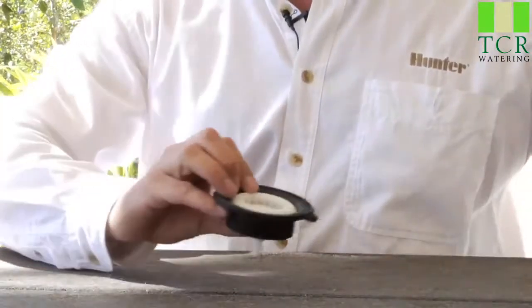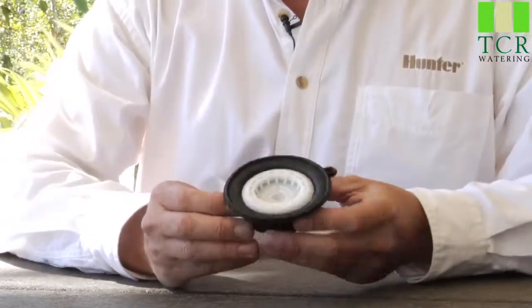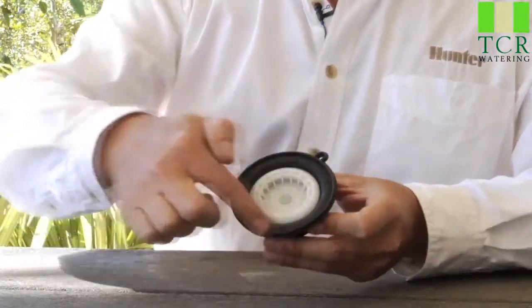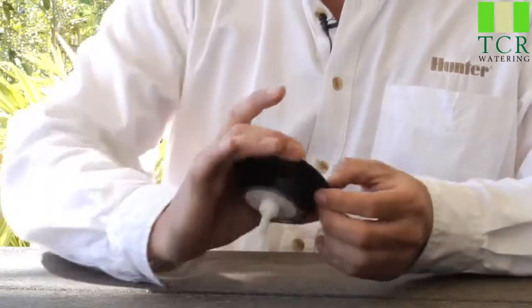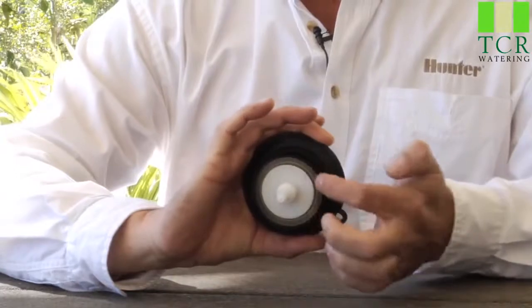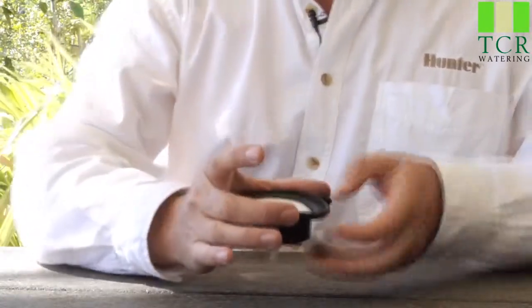The diaphragm operates off of something called surface area differential. And as you can see, the diaphragm sits horizontally in the valve. The top surface of the diaphragm here is much larger diameter than the bottom side, as you can see here. So the difference in surface area is what creates the differential.